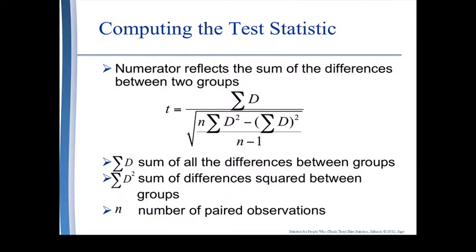The formula for calculating a paired samples t-test is about as complicated as the independent samples test, but it is a different test. Rather than relying on the means between the two groups, it uses the differences between the scores of the two samples. It can do this because the samples are paired.